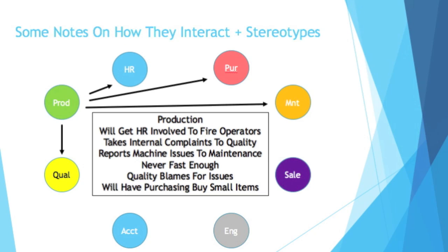Moving on to production. Production will get HR involved to fire operators — usually production will give warnings first, but to eventually fire bad operators they have to get HR involved. They will take internal complaints to quality so that things get fixed, and they'll report machine issues to maintenance. The joke is that production is never fast enough to meet demand. In quality — that's where I work — we like to blame them for a lot of our issues. Production will also go to purchasing if they need additional small items to complete their work.